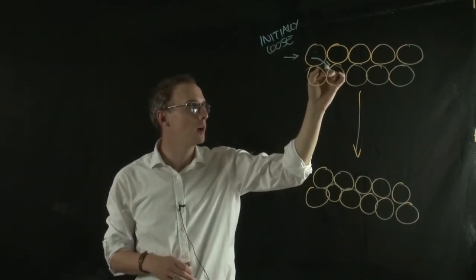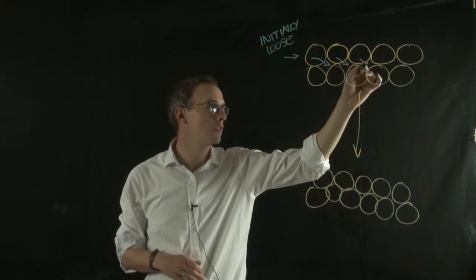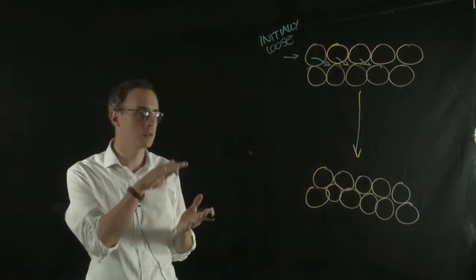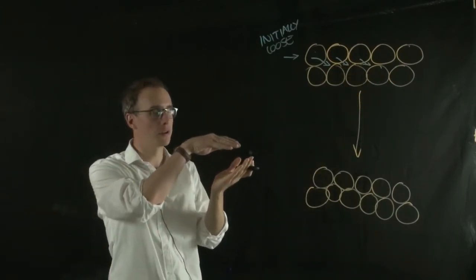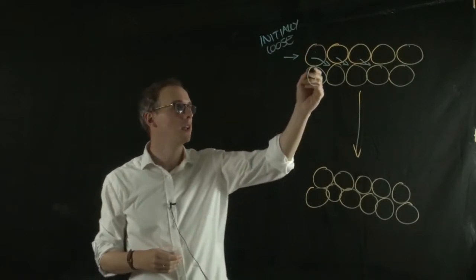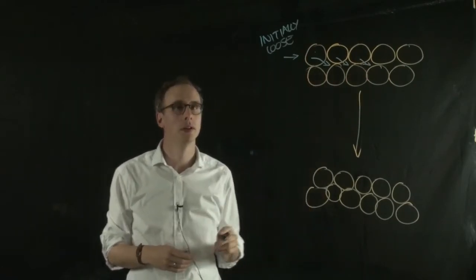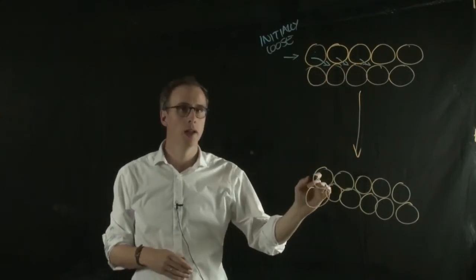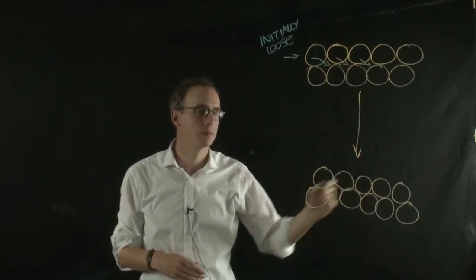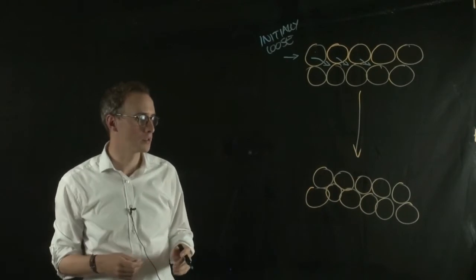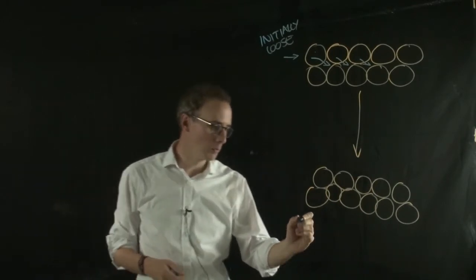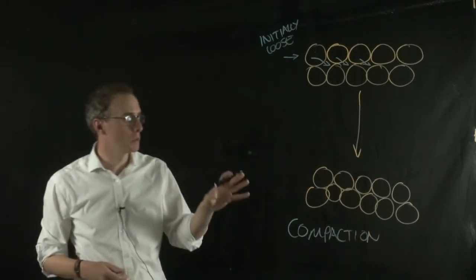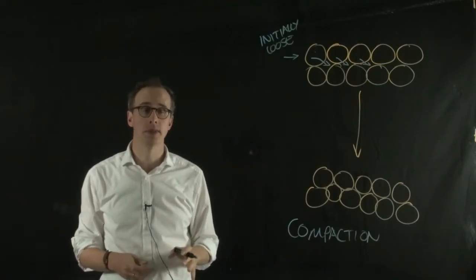you'd see that we'd force a number of these particles, or a lot of these particles into the spaces, or we'd force the particles to fill the spaces between the particles below. So we'd go from an initially loose material to a more compacted particle distribution. And this is called compaction. And it's what would happen to initially loose materials.